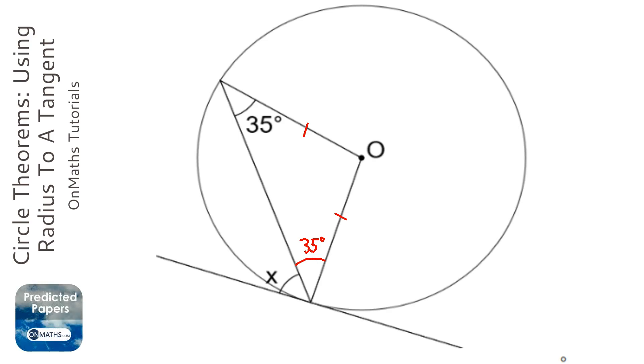Now, the circle theorem we're going to use is the fact that when a radius and a tangent, which are these two here, meet, they always meet at right angle. So this is a right angle here.